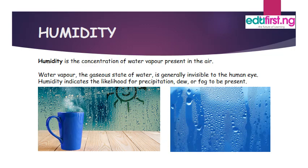Humidity is the concentration of water vapor present in the air. Water vapor — the gaseous state of water — is generally invisible to the human eye, and humidity indicates the likelihood for precipitation, dew, or fog to be present.